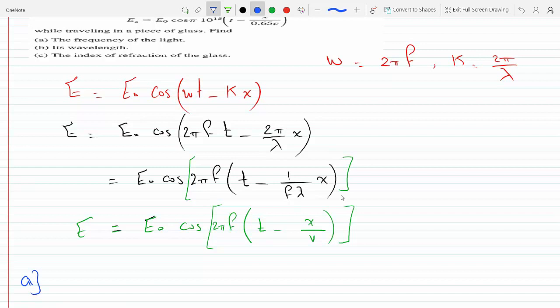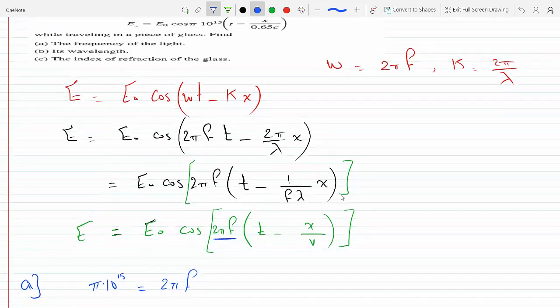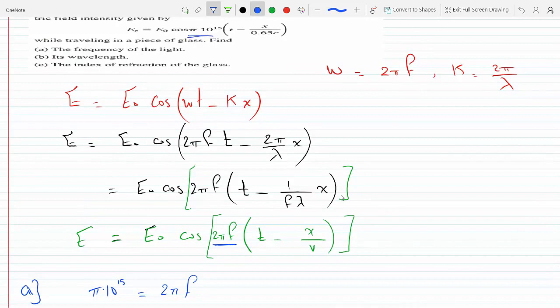For part a, the cosine is just π times 10 to the 15, so we have π times 10 to the 15 times t. This equals 2π times the frequency.